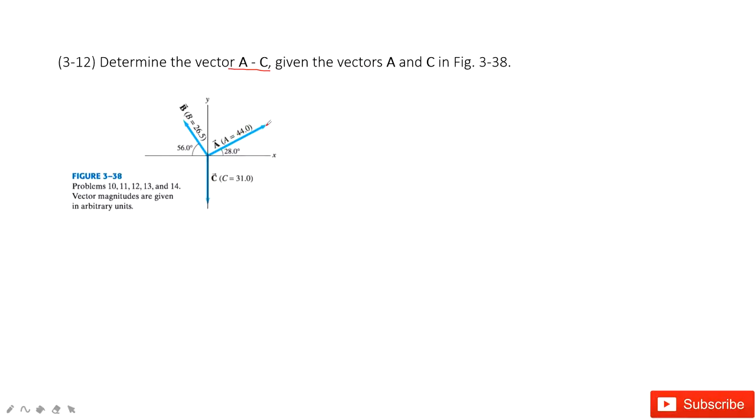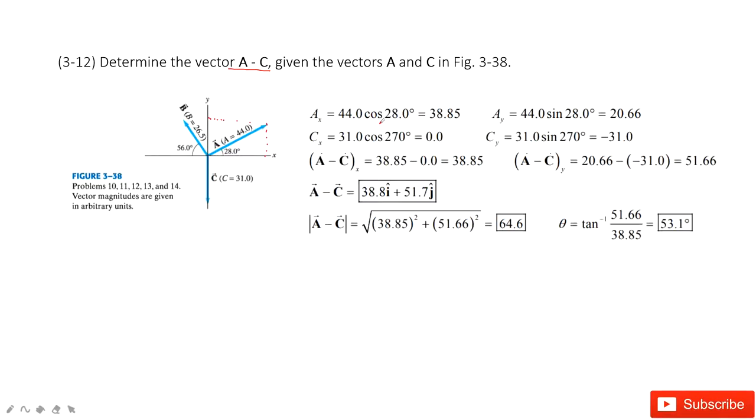First, we project a in x component and y component. So ax is a times cosine 28 degrees, ay is a times sine 28 degrees.